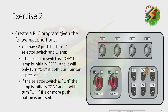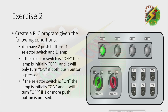With the selector switch off: pressing PB1 — nothing happens. Pressing PB2 — nothing happens either. But when I press both PB1 and PB2, the lamp will turn on. Now let's turn on the selector switch — the lamp is initially on. Pressing PB1 turns the lamp off, and pressing PB2 turns the lamp off also.